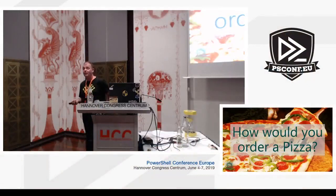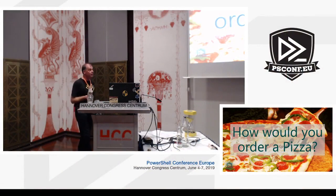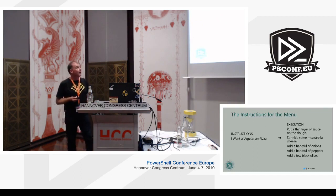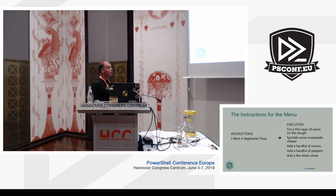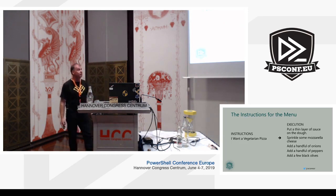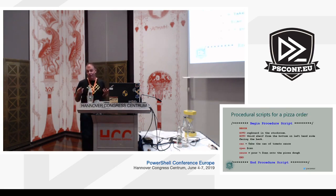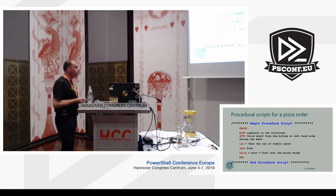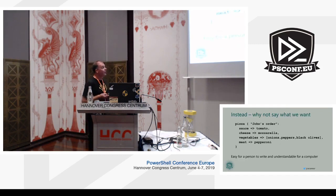I want to start off with a question that goes back to one of the talks this morning about testing code as infrastructure. If you think about how you order a pizza — say you want a cheese, tomato, mozzarella, or vegetarian — there are lots of different options. Would you go and say 'put a thin layer of sauce on the dough, sprinkle some mozzarella cheese, add a handful of onions'? That's the procedural approach a lot of us as programmers think in, rather than using a declarative approach.